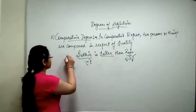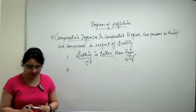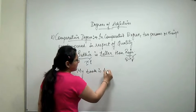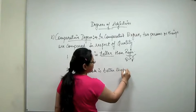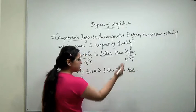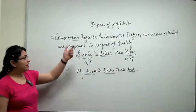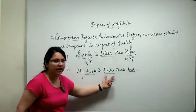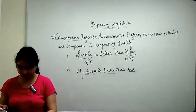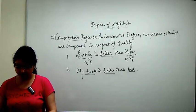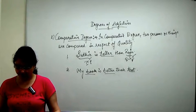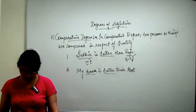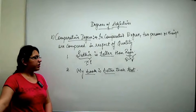Another example: my book is better than that book. Here 'better' is used as a comparative degree adjective — 'better than' comparing my book to that book. It is used as a comparative degree of an adjective. Write it down in your copies.